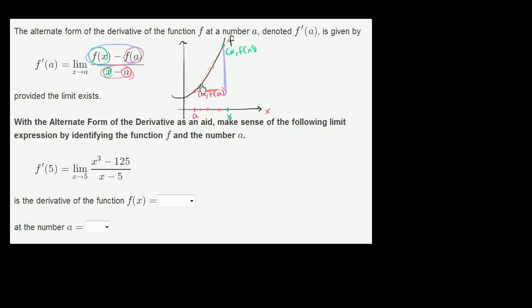But as x gets closer and closer, the secant lines better and better approximate the slope of the tangent line. Where the limit as x approaches a, but doesn't quite equal a, is going to be, this is actually our definition of our derivative, or the alternate form of the derivative definition. And this would be the slope of the tangent line, if it exists.